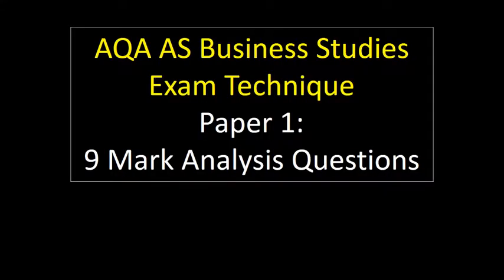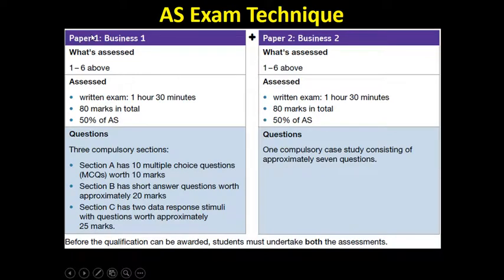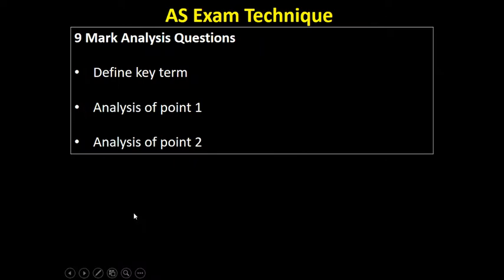Hi there, this is Mr. Evans. This video is going to look at the structure for answering a nine-mark question, particularly in paper one. The nine-mark questions crop up in section C. The structure for answering a nine-mark question lends itself to a definition to start off with — defining the key term in the question, or at least one key term — and two paragraphs of analytical writing focused on answering the question.